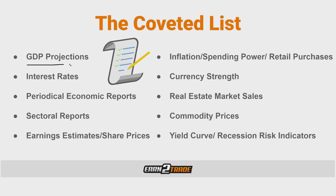The first macroeconomic indicator is GDP projections. The gross domestic product reflects the overall value of goods and services produced in a particular economy, indicating whether it's slowing or growing. Its results and projections are primary tools for analysis of the current and future state of an economy. Positive GDP results and projections signal a flourishing economy, while negative ones indicate a potential economic contraction.